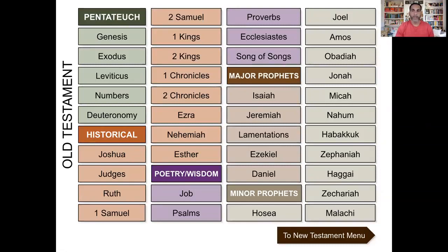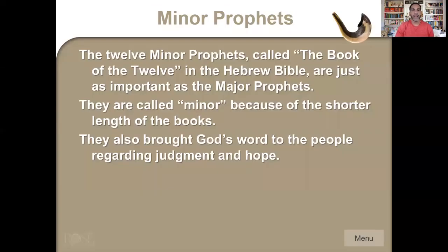We're going to split that into two and cover six of the Minor Prophets today. The Minor Prophets, called the Book of the Twelve in the Hebrew Bible, are just as important as the Major Prophets. They are called Minor only because of the shorter length of the books. They also brought God's Word to the people regarding judgment and hope.